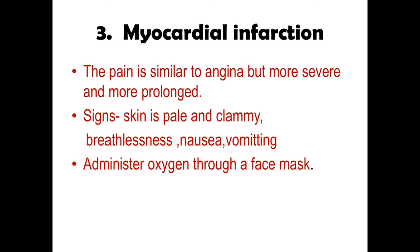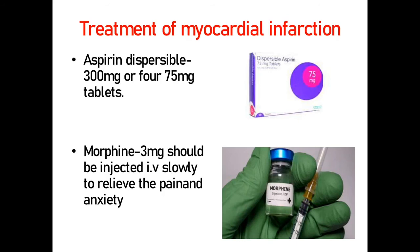In Myocardial Infarction, the pain is similar to that of angina but more severe and prolonged. The skin becomes pale and breathlessness can be seen; administer oxygen via face mask. Not more than 2 doses of glyceryl trinitrate should be given, as they may lead to hypoxia and exacerbate the myocardial infarction. Dispersible aspirin 300 mg or four tablets of 75 mg dissolved in water can be given. Morphine 3 mg injected slowly via intravenous route may also be given to relieve pain and anxiety.